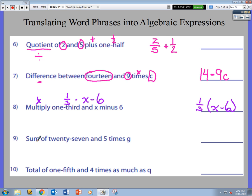Next one, sum of. Sum tells me to add. Sum of, what am I adding together? 27. Well that's easy, that's 27. And I'm adding sum of 27 and, so that's where my little addition sign goes. 5 times g.